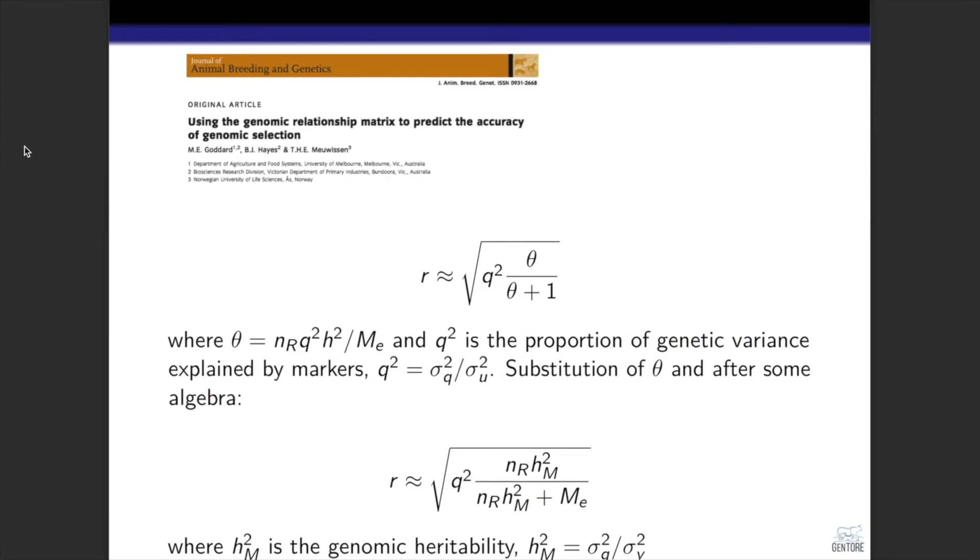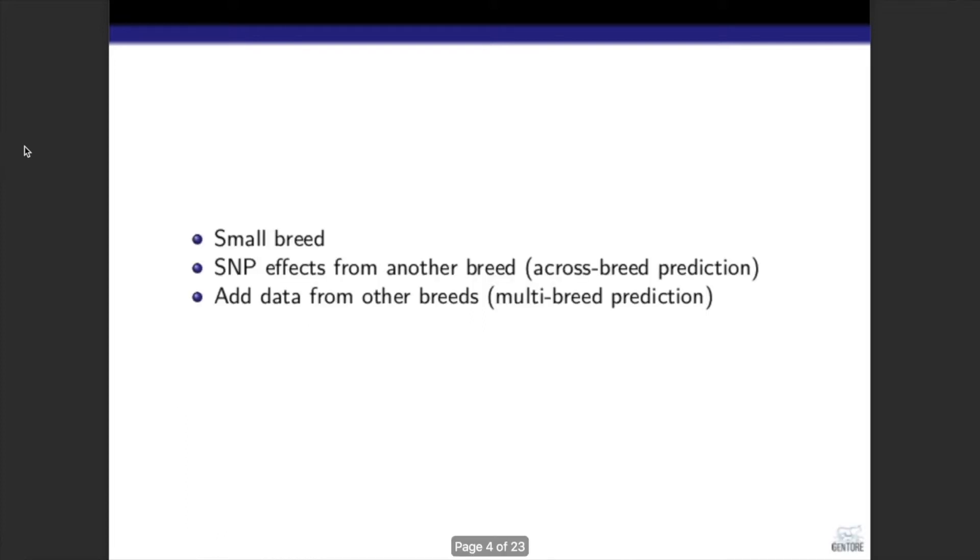Genomic prediction accuracy depends on the genetic variance that can be explained by SNPs and the accuracy of the SNP effect estimates. For an accurate genomic prediction, we need a large population of individuals with both phenotypes and genotypes, and this is actually not possible for all breeds or for all traits.